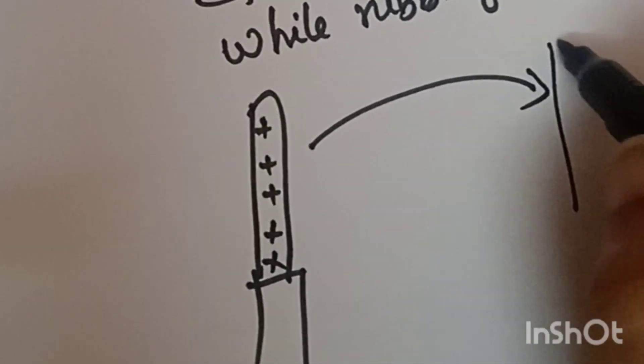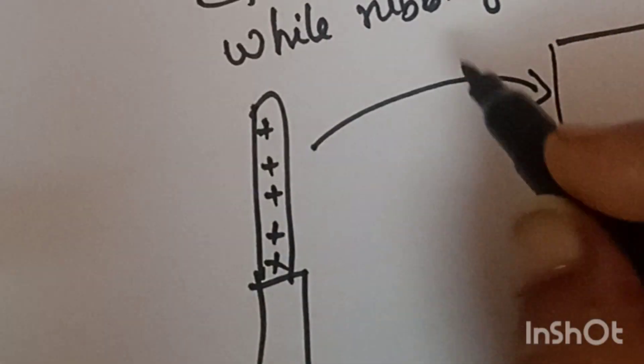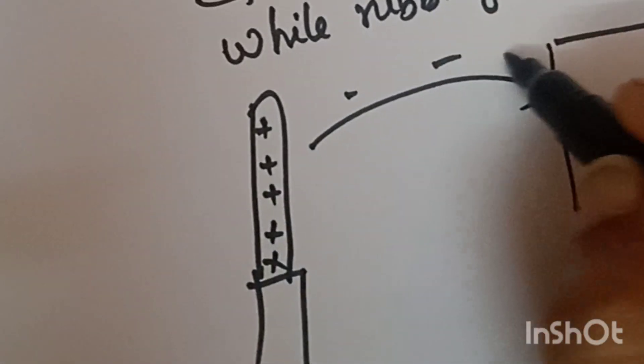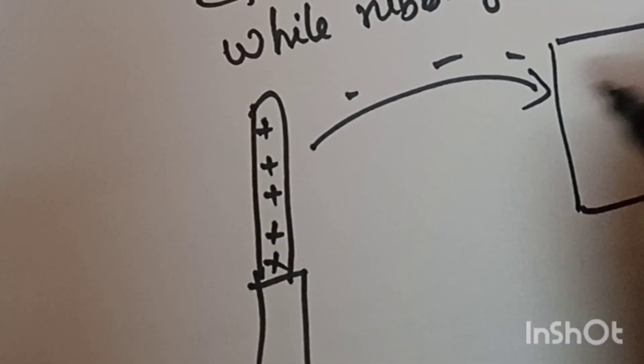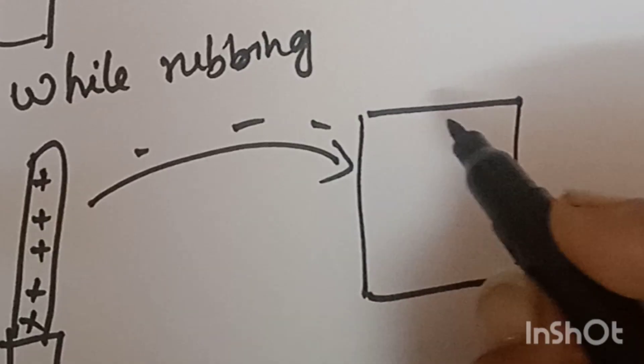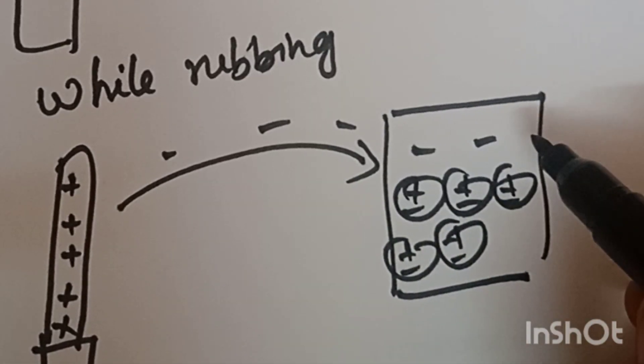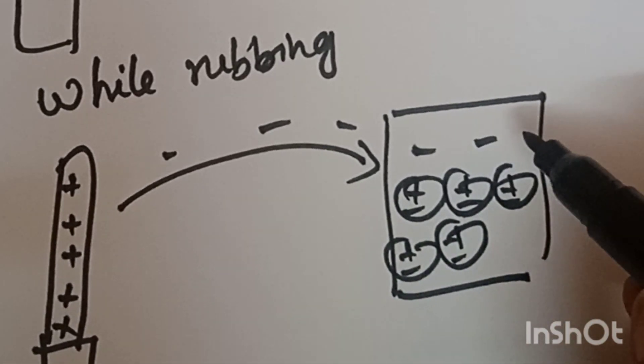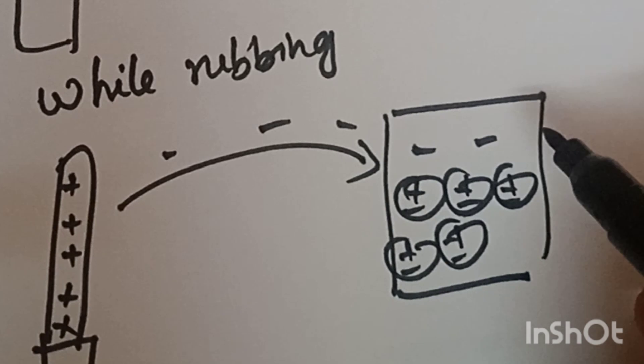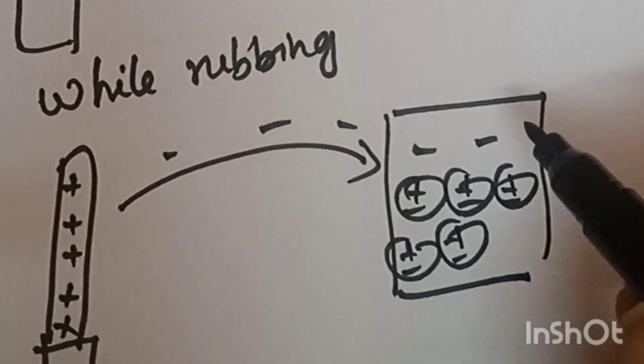For example, if 5 electrons transfer from the glass rod to silk cloth, the glass rod has plus 5 charge and the silk cloth has minus 5 charge. Initially both are neutral with zero total charge. After rubbing, the total charge is still zero. Therefore, this demonstrates conservation of charge.